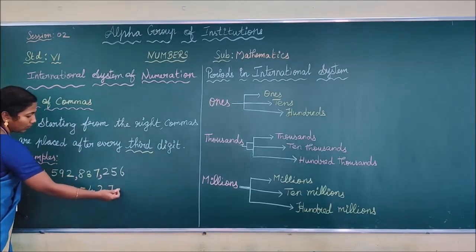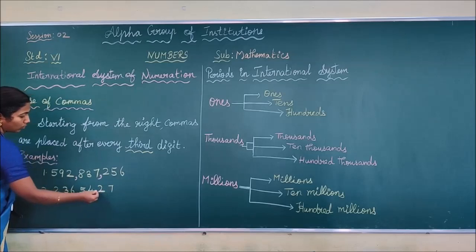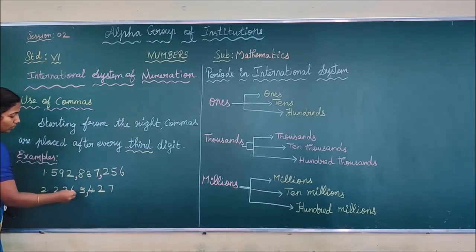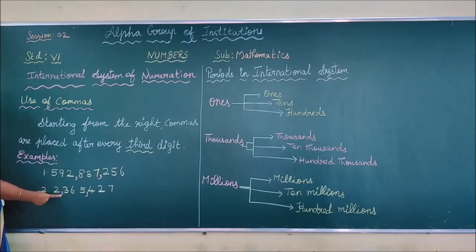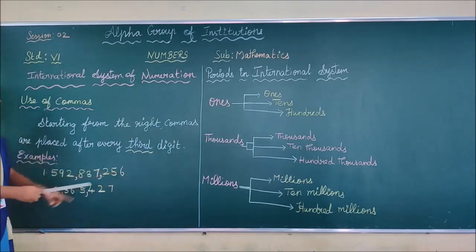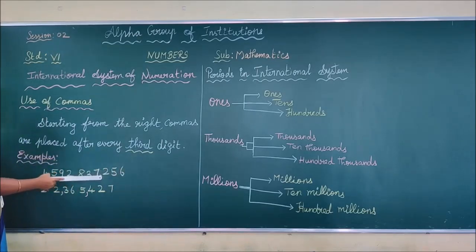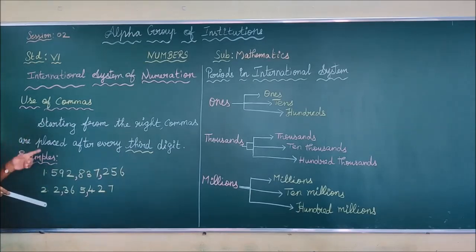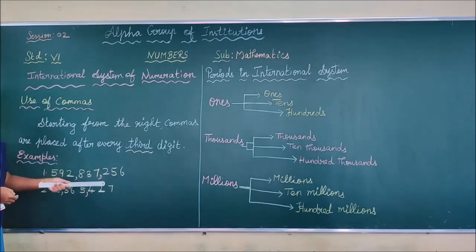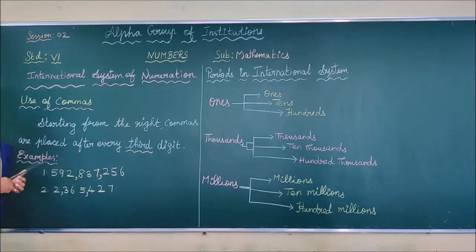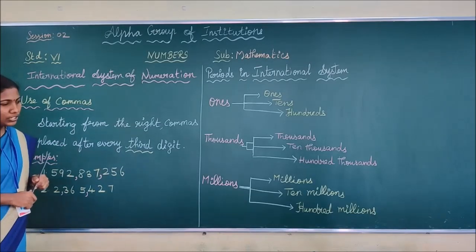Similarly, for the second example, starting from the right: 1, 2, 3 — first comma; 1, 2, 3 — next comma; and before that you have only one digit, so you stop there. I hope you all understand. In the Indian system, starting from the right, after the first three digits you place the first comma, then every two digits you place the next commas. But in the international system, every three digits you place the commas.